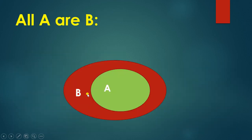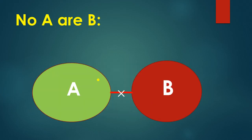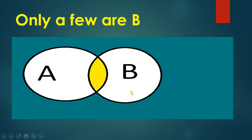Next is 'all A R B' — when this statement is given, you have to make this Venn diagram. Next is 'no A R B', which means no element of A belongs to B. Here this part is for A and this part is for B, represented by putting a cross sign on the line. And 'only a few A R B' — this shaded part shows that only a few items of A belong to B.